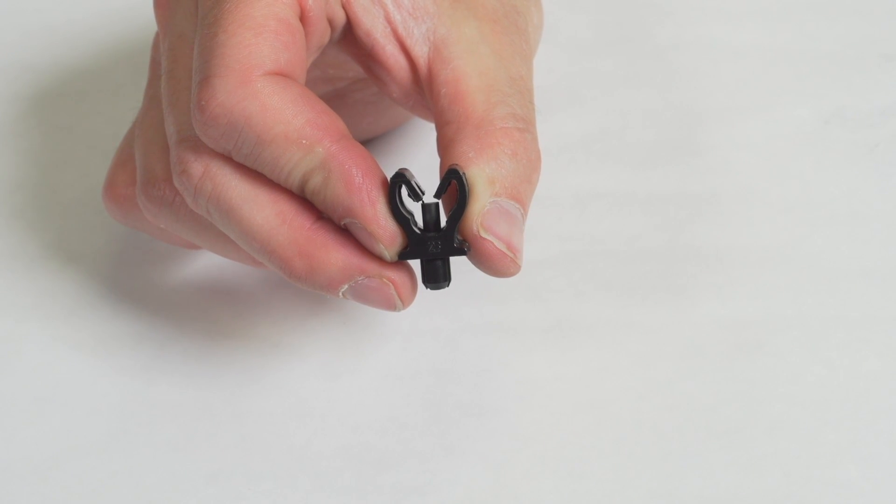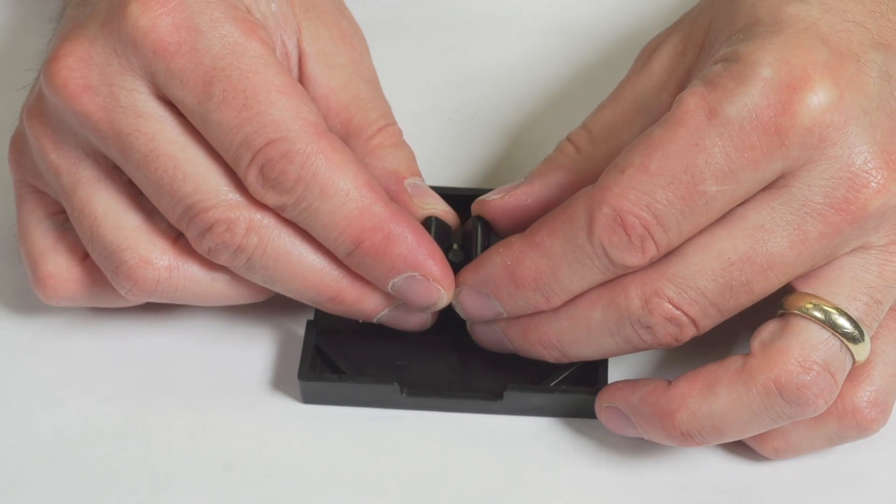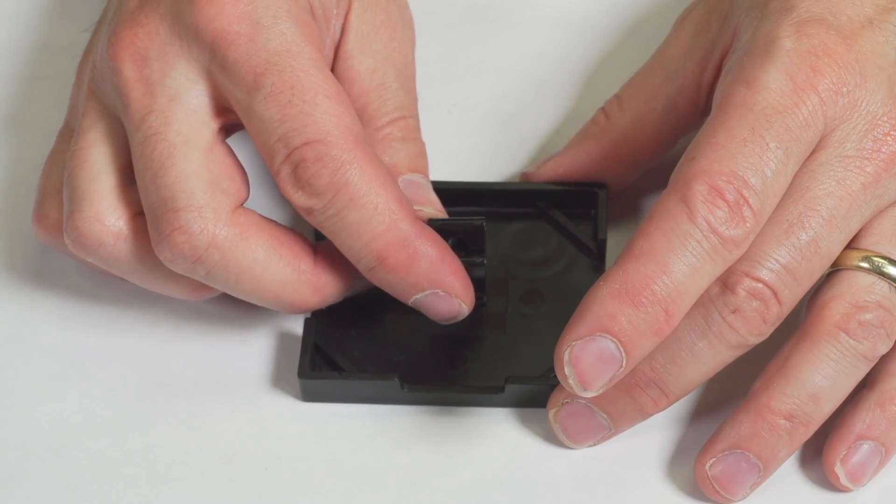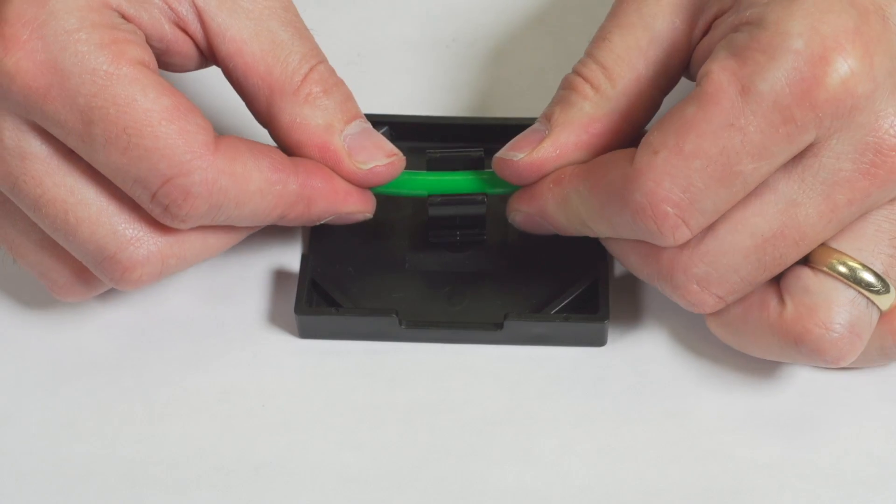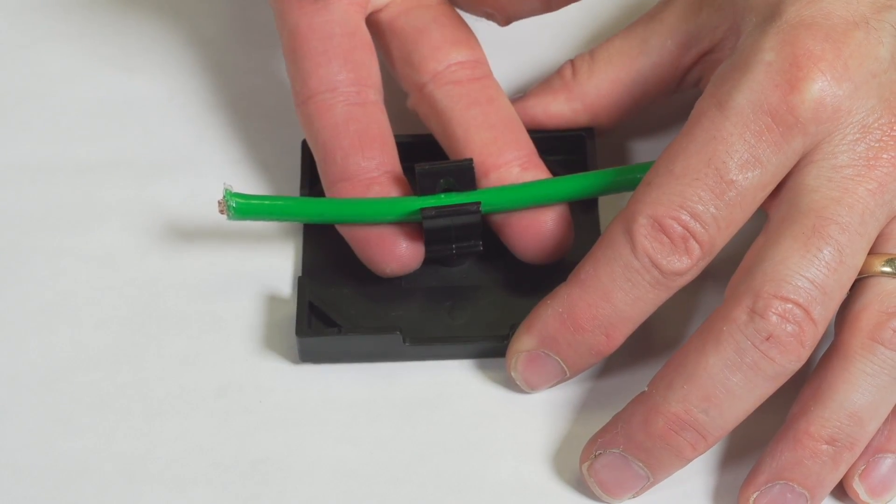Push rivet mount cable clips are used where a more robust panel attachment is needed. The clip is pre-positioned in the hole. The cable is then pushed into place, driving the pin into the part body. The legs expand and fasten the part in place.